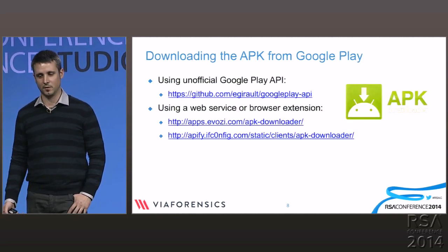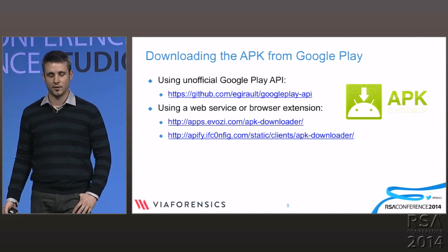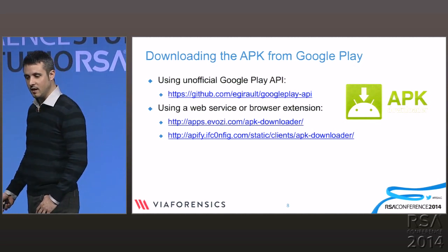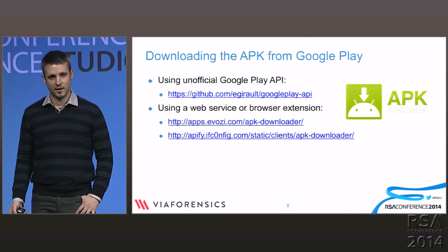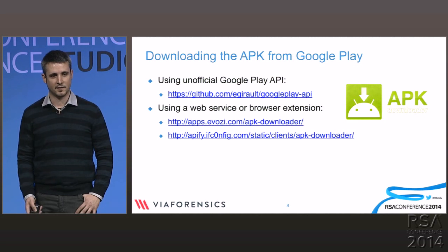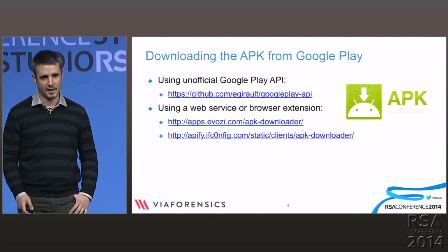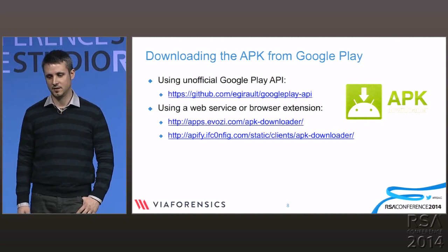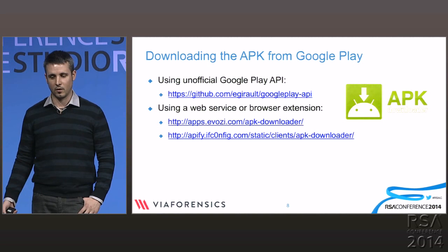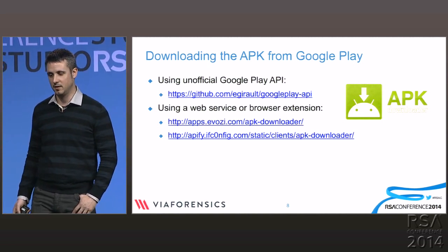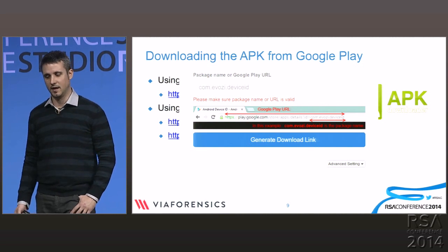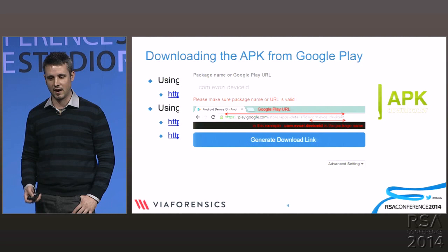If you don't have a phone or the application isn't installed, you can also download it directly from the Android Market. There is an unofficial Google Play API written in Python — you just edit the config file, provide Google account credentials and an Android device ID, and then you can download from the command line. You can also use a browser extension or web service like APK Downloader — you just put in the package name or the Google Play URL and it generates a download link so you can directly download the APK file from Google Play.